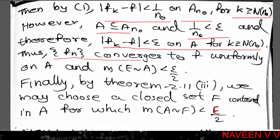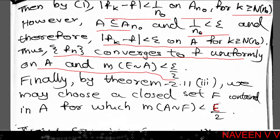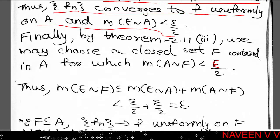Therefore, the sequence fn converges to f uniformly on A, and measure of E minus A is less than epsilon by 2. Now, since A is a measurable set, by Theorem 2.11 (third part), corresponding to epsilon by 2 greater than 0, we get a closed set F contained in A for which measure of A minus F is less than epsilon by 2.